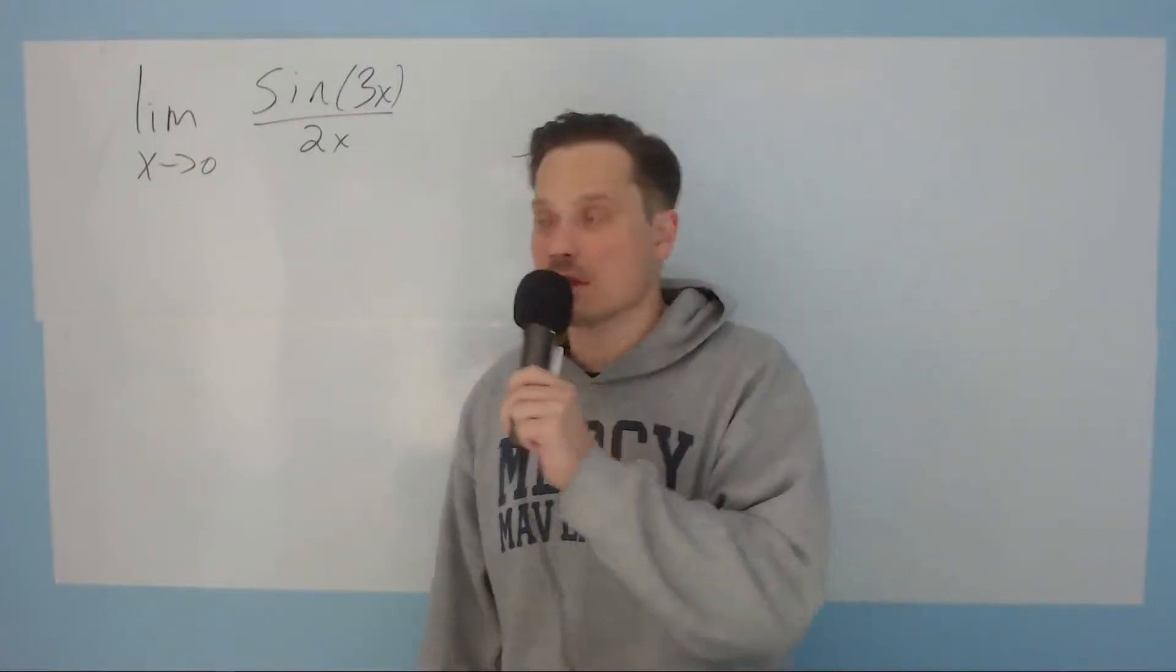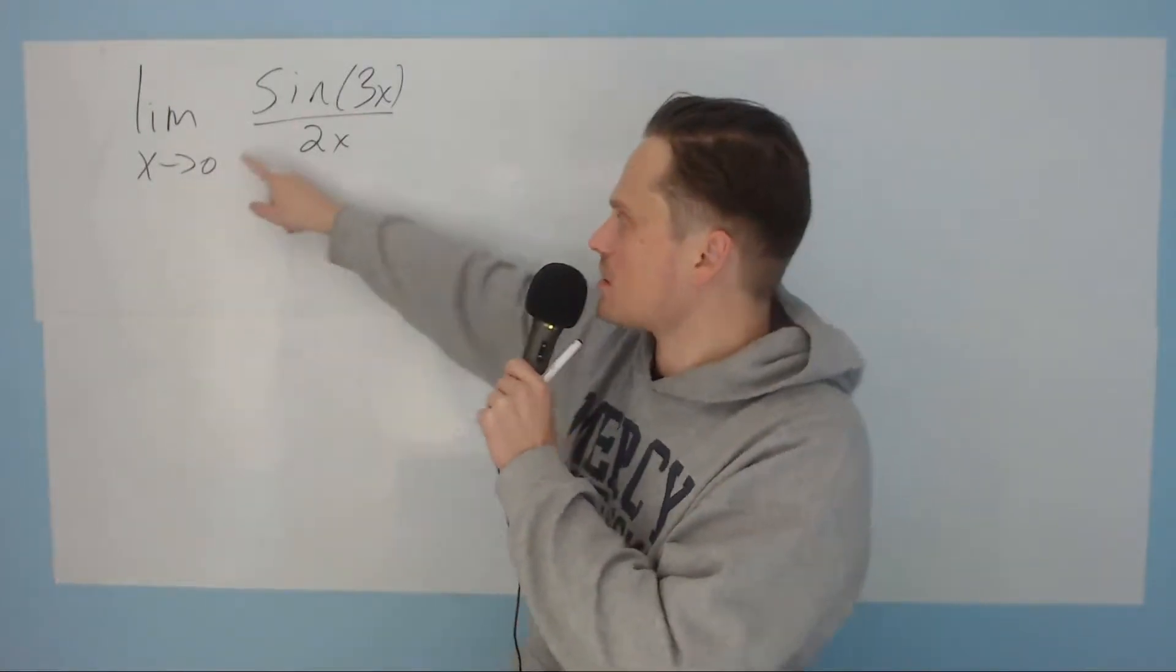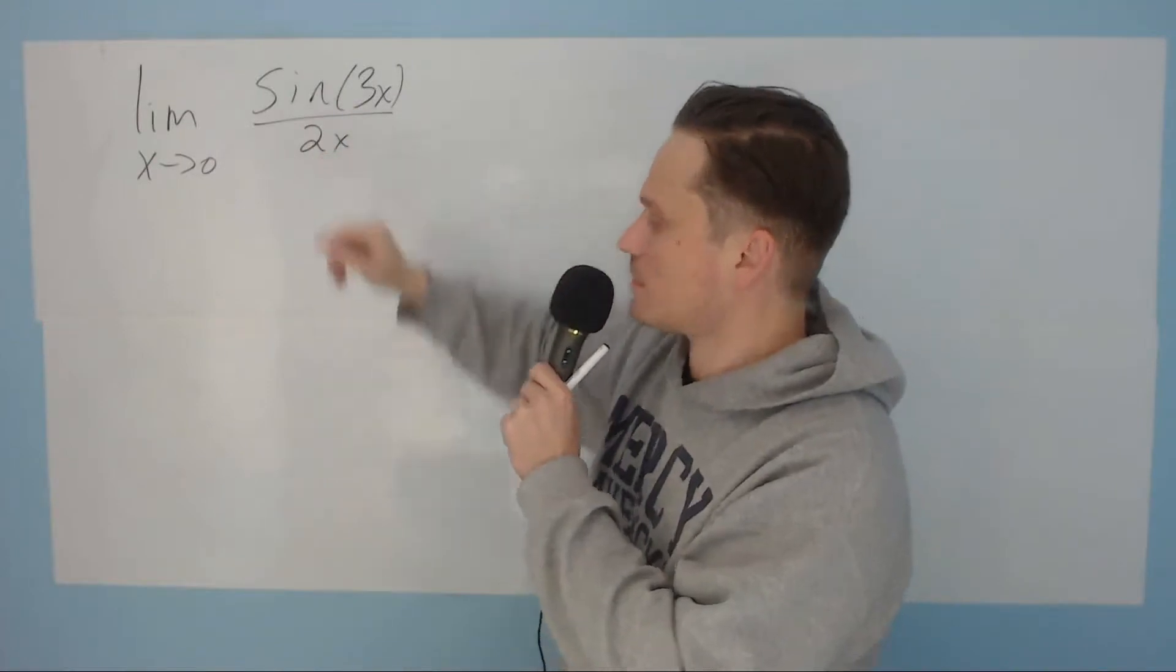In this one, let's take a look at finding this limit right here that says the limit as x approaches 0 of sine of 3x over 2x.